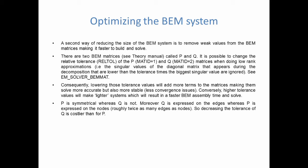Conversely, higher tolerance values will make lighter systems, resulting in faster BEM assembly and faster solve, especially when the BEM mesh is large — that is, cases with a fine mesh. If your mesh is relatively coarse, those tolerance values won't make a big difference, but with a very fine mesh you might consider adjusting those default values. One final remark: P is a symmetric matrix whereas Q is not. Q is expressed on edges and P on nodes; since there are twice as many edges as nodes, Q is a bigger matrix than P, so reducing the tolerance for Q is costlier than for P.